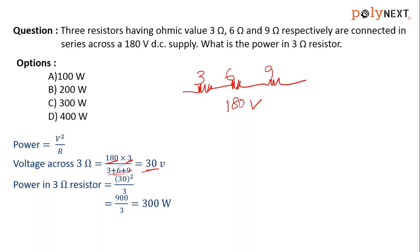Coming to the options, we can see option C carries the 300 watt answer. Power in the 3 ohm resistor will be 300 watts.